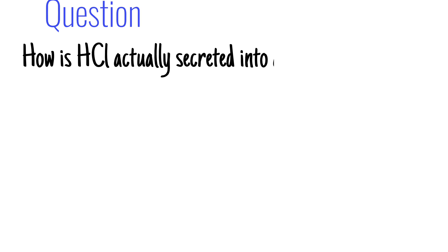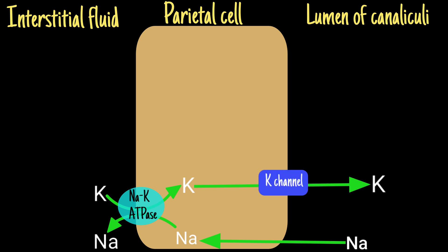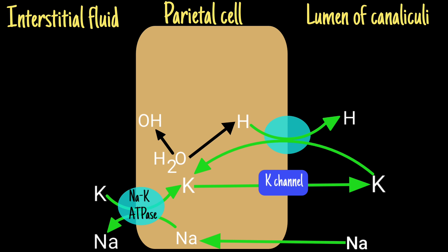How is HCl actually secreted into the gastric lumen? Sodium ions brought in from the canaliculi are transferred to interstitial fluid in exchange for potassium ions through Na+/K+ ATPase on the basolateral side of the parietal cell. This potassium brought in is transferred to the lumen of the canaliculi through potassium channels on the luminal side of the parietal cell. Hydrogen ions dissociated from water in the parietal cell are exchanged with potassium ions by active primary transport through hydrogen-potassium ATPase on the luminal side of the parietal cell.